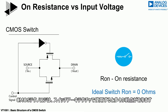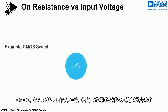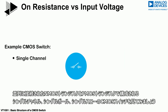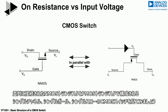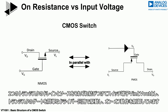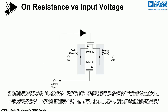CMOS technology offers many benefits when used in switch architecture. Looking at a single channel, single pole, single throw CMOS switch, which consists of NMOS and PMOS transistors connected in parallel — the respective drains and sources of the two transistors are tied together and become the switch terminals VIN and VOUT, while the gates of the two transistors are driven by a simple driver circuit to control the on-off action of the switch.